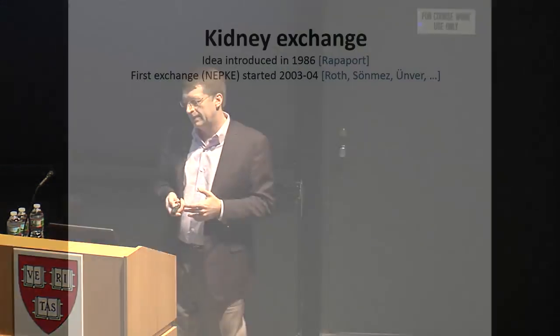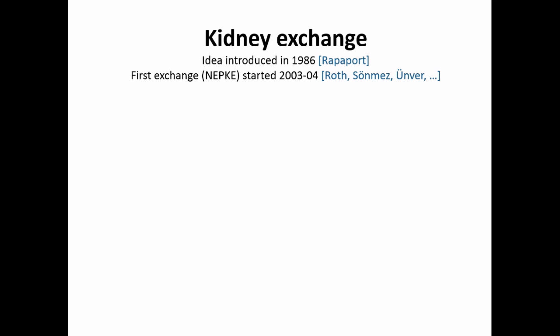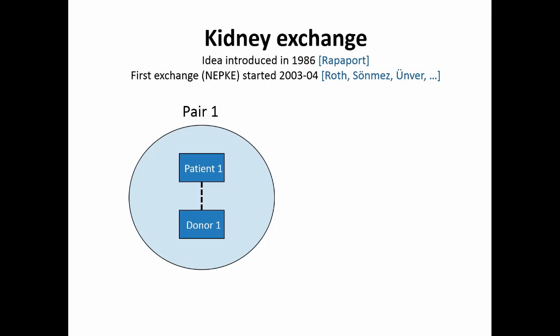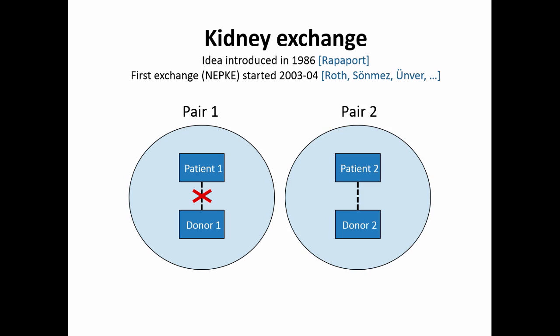The idea was introduced by medical people in 1986, and the first organized kidney exchange started right here in New England around 2003-2004. The basic idea: you have incompatible pairs — a patient and a willing but incompatible donor. You find another pair that is also willing but incompatible. At the simplest, you swap them: donor one gives to patient two, donor two gives to patient one. That would be a two-cycle.